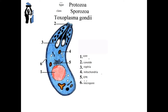The anterior end of the cell is narrowed as a conoid. From the conoid, tubes extend into the body and in insect-like extensions called rhoptries. They contain substances that facilitate the penetration of the parasite into the host cells.